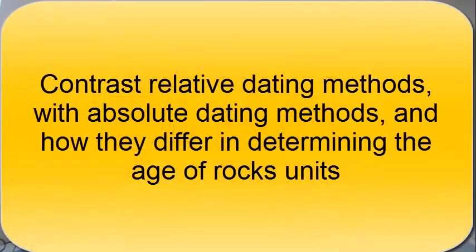Now that you have been introduced to relative dating methods, compare this method to absolute dating methods previously discussed in Lecture 8. How do they differ in determining the age of rock units? Both of these methods can be used together to reconstruct the sequence of events in the evolution of dinosaurs. You should now be able to contrast relative dating methods with absolute dating methods and understand how they differ in determining the age of rock units.